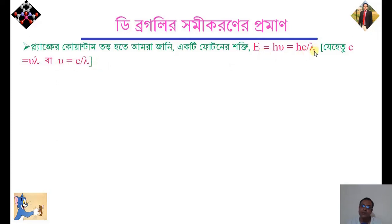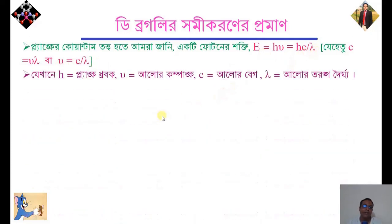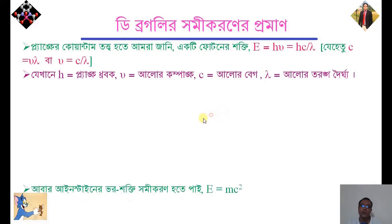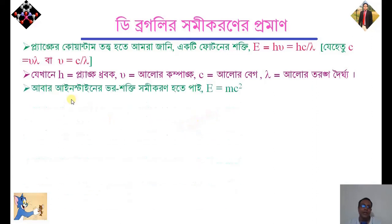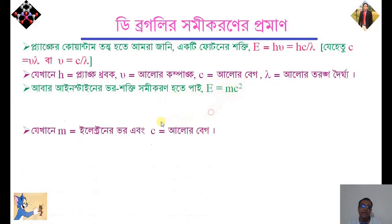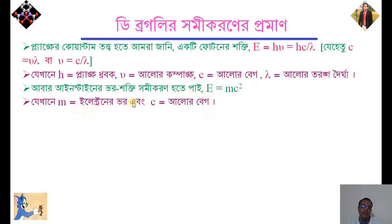This gives H equal to C by lambda, and C is equal to 12 and our lambda is equal to 0. So E is equal to A, A is equal to mc squared. So E is equal to A, A is equal to H.